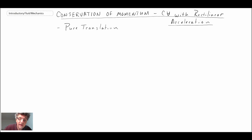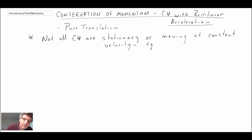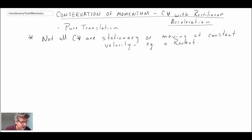Why we'd be interested in this: you can have applications whereby the control volume is not stationary, nor is it moving at constant velocity. An example of this is a rocket. When you consider a rocket, it accelerates as it's moving — it might be moving in one direction. But if you wanted to do control volume analysis on that type of system, what would you need to do? And would the equations apply?